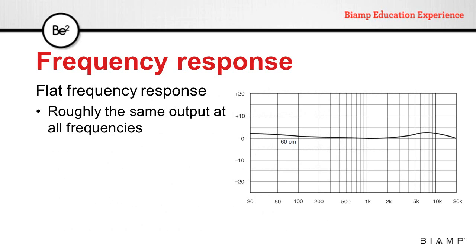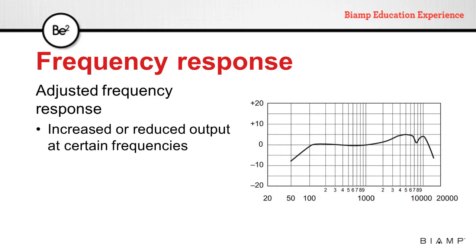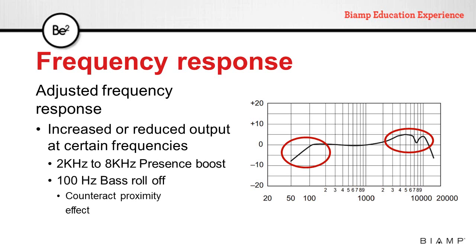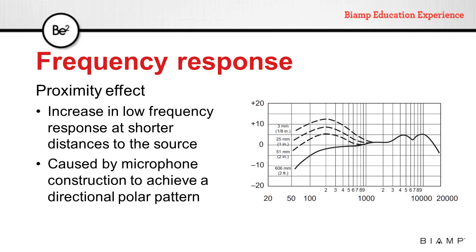The other group is adjusted frequency response, which can have increased or reduced output at certain frequencies to tailor the microphone for specific applications. For instance, a microphone can have a presence boost between 2 kHz and 8 kHz to increase intelligibility. It can also have a 100 Hz bass roll-off to counter proximity effect. Proximity effect is the increase in low frequencies at short distances to the source.